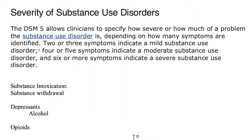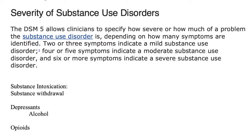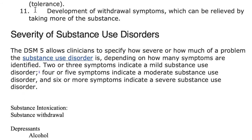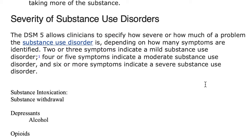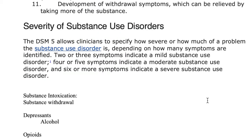The DSM-5 allows clinicians to specify the severity of a substance use disorder depending on how many symptoms are identified. Two or three symptoms indicate a mild substance use disorder, four or five indicate moderate, and six or more indicate a severe substance use disorder. This helps give a clearer picture of where the client stands.